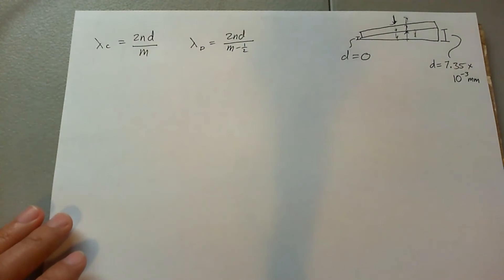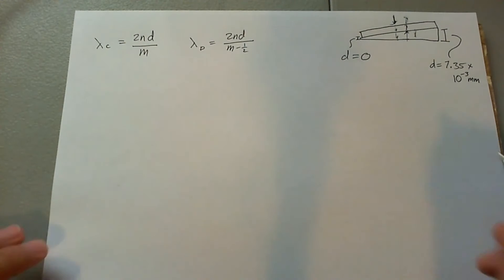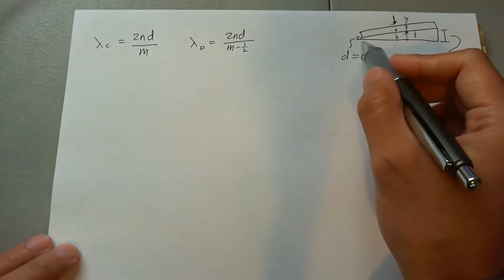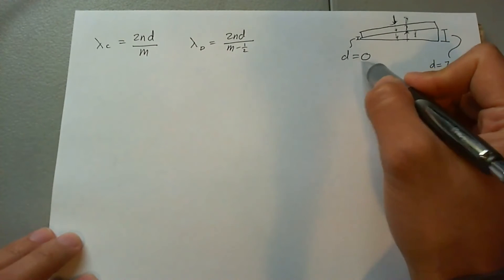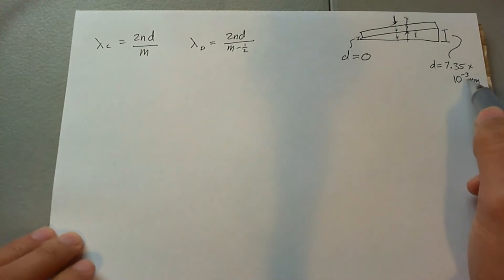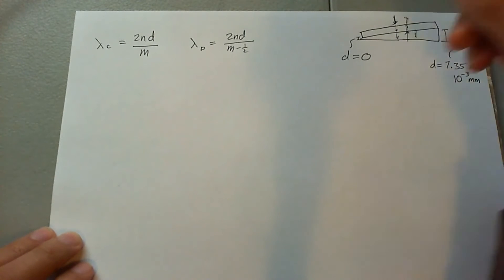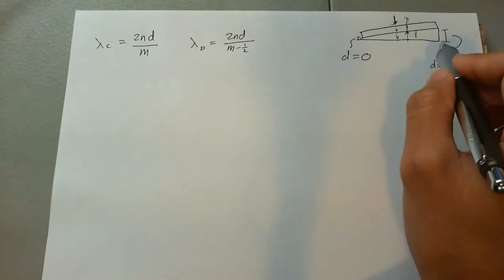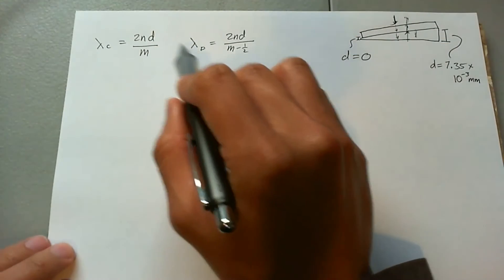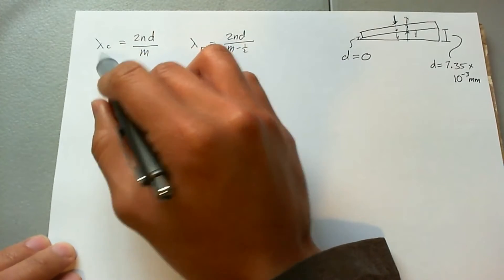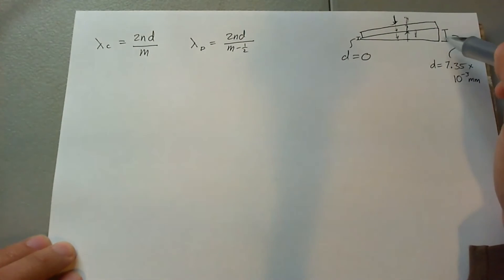We're going to look at the space between the glass plates as the medium of interference. If you look at that space between the two glasses, d goes from 0 to 7.35 times 10 to the negative 3 millimeters. So the mode m is going to go from 0 to whatever. The question is how many modes are there going to be for a constructive wavelength to appear through this glass.